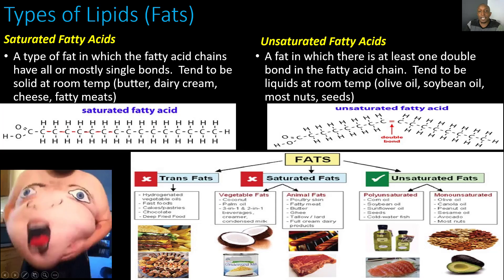Unsaturated fatty acids are a fat in which there is at least one double bond in the fatty acid chain, and they tend to be liquids at room temperature. Some examples include olive oil, soybean oil, most nuts, and seeds. Notice this chain has a double bond in it — in a saturated fatty acid there are only single bonds, but in an unsaturated fatty acid they contain at least one double bond. You also have polyunsaturated fatty acids, which contain multiple double bonds, as hinted by the word poly.